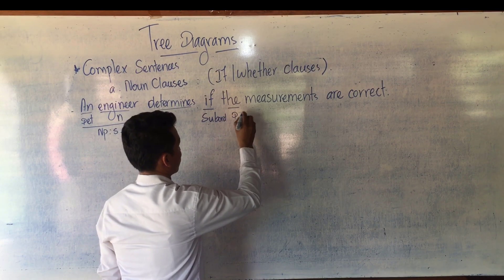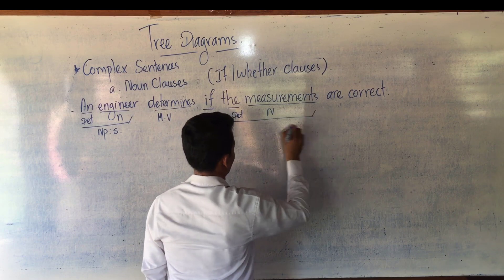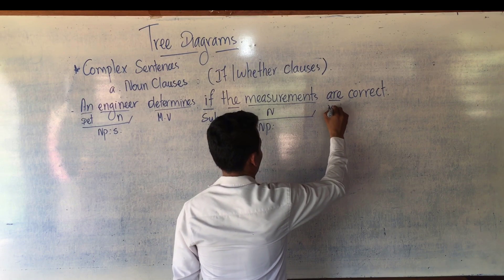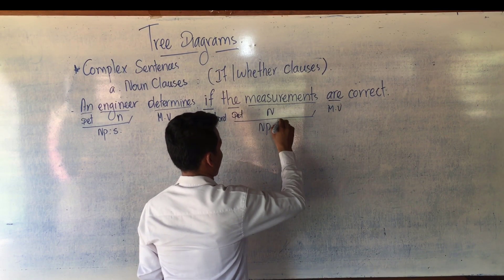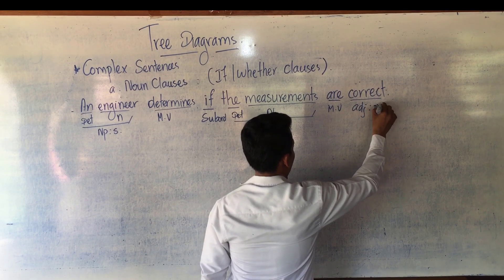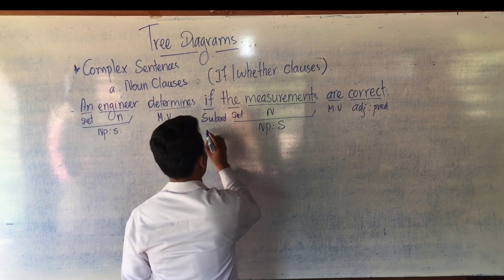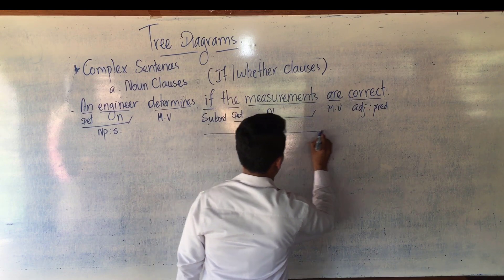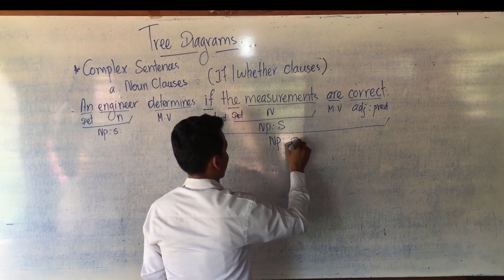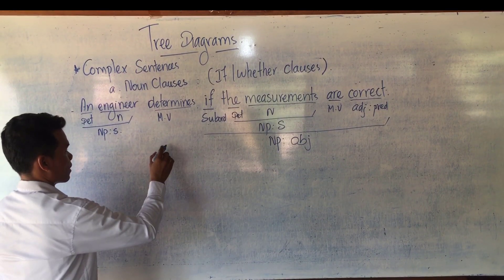'The measurements' — 'the' is a determiner, 'measurements' is a noun, so determiner and noun become a noun phrase, which is the subject of the subordinate clause. 'Correct' is an adjective, functioning as a predicate adjective or subject complement. From the subordinator 'if' to the end of the sentence, it is called a noun clause, functioning as the direct object. So we can now draw our diagram.